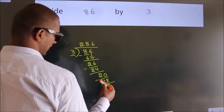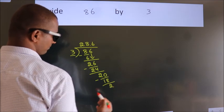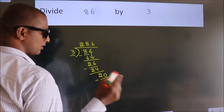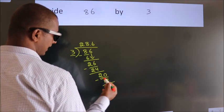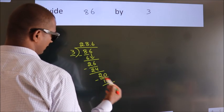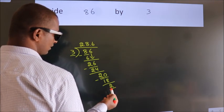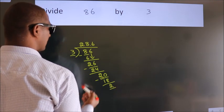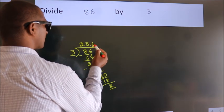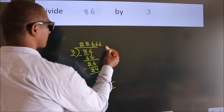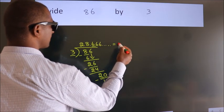Now we subtract, we get 2. Now you observe, we had 2 here and we got 2 again. That means this number keeps on repeating. So this is our quotient.